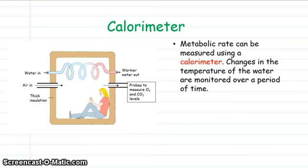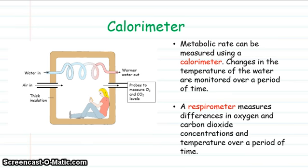This can be measured in a calorimeter to assess metabolic rate by monitoring the changes in temperature of the water being pumped through the calorimeter over a period of time, or you can use a respirometer which measures the differences in oxygen and carbon dioxide over a period of time.